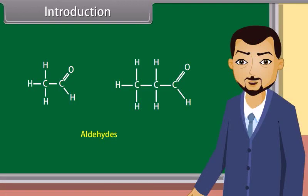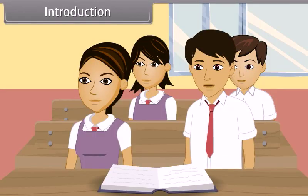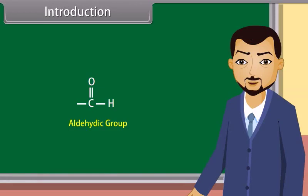Aldehydes are the organic compounds containing the aldehydic group at the end of a hydrocarbon chain. What is the aldehydic group, teacher? The aldehydic group is a functional group defined as CHO. Now can anybody tell me what are ketones?